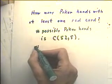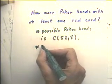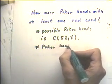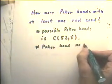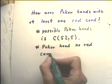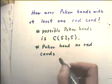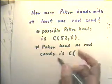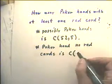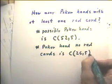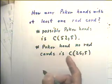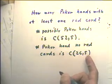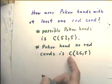Okay, the number of poker hands with no red cards is what? There are 26 cards that aren't red. Out of those 26 cards, we're choosing five. So we can get poker hands with no red cards by choosing five objects out of 26 where the order doesn't matter.